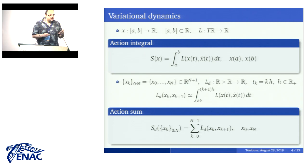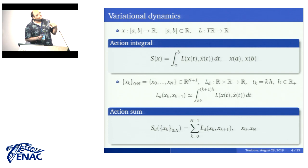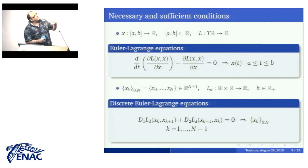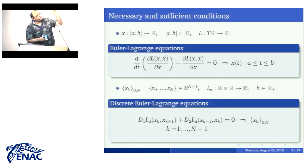Hamilton's principle says that when we take variations of the action with respect to continuous or discrete curves, the sufficient and necessary conditions for the extremals of those curves are given by the Euler-Lagrange equations, and in the discrete case, the discrete Euler-Lagrange equations. These equations, when we have enough regularity, provide the continuous dynamics — the curve x(t) at all times — and in the discrete case, we get the full sequence of points in our manifold xk.